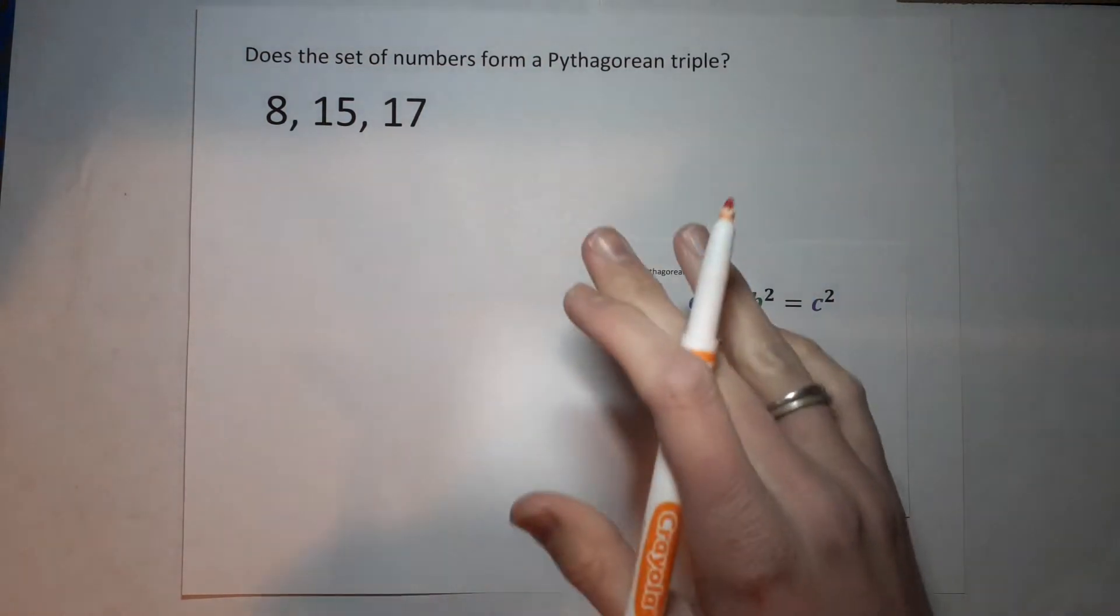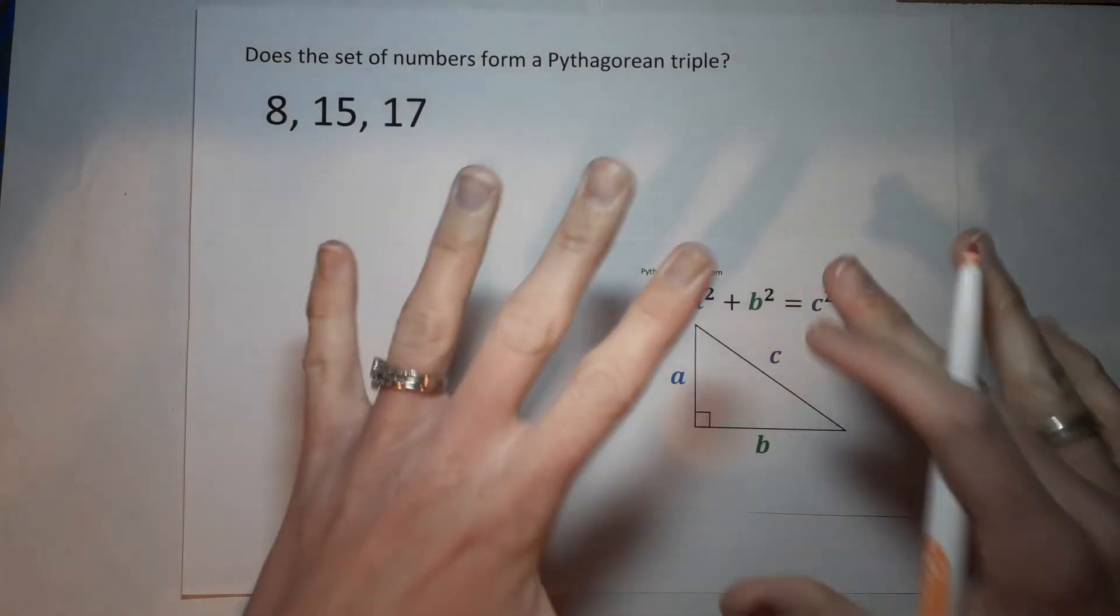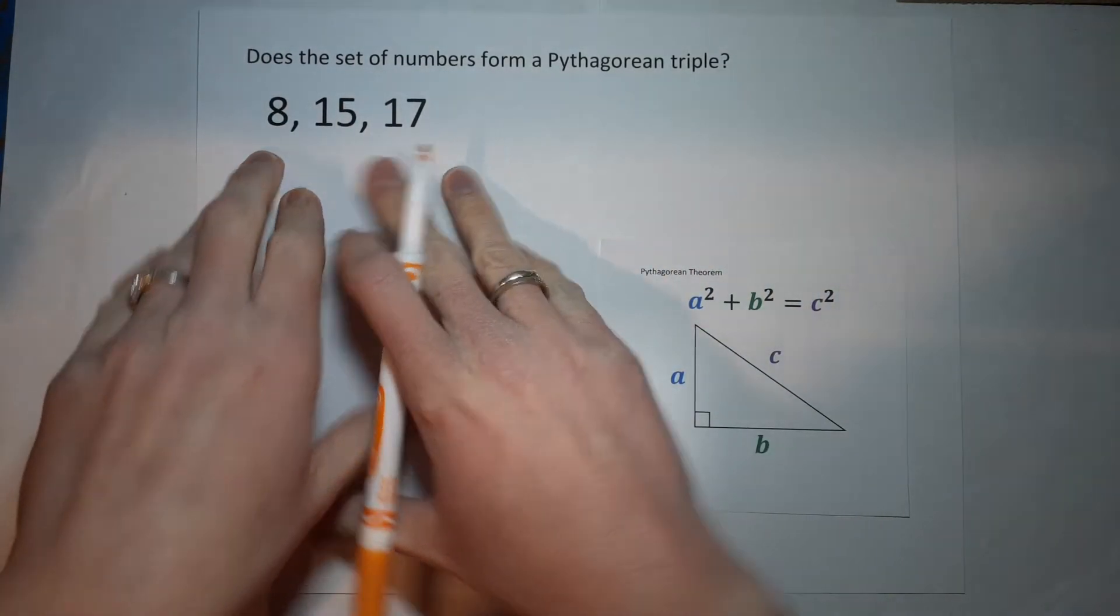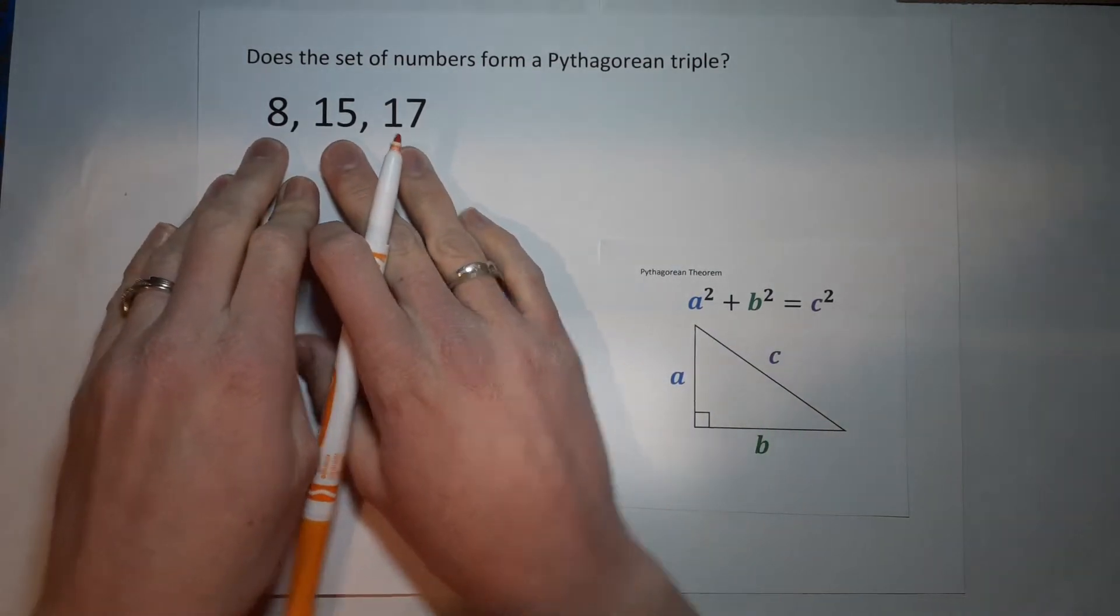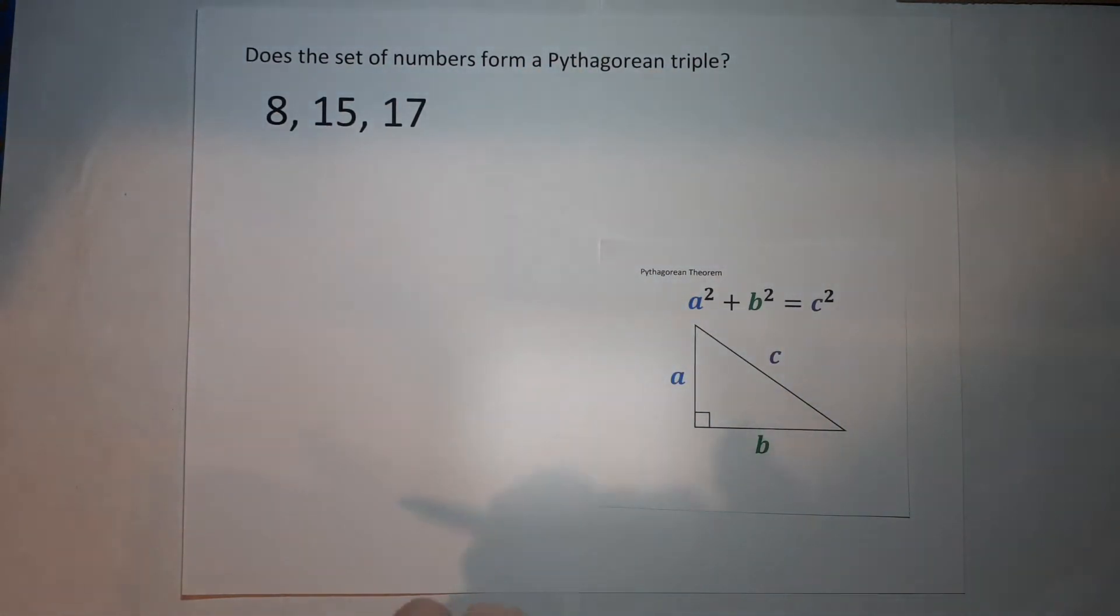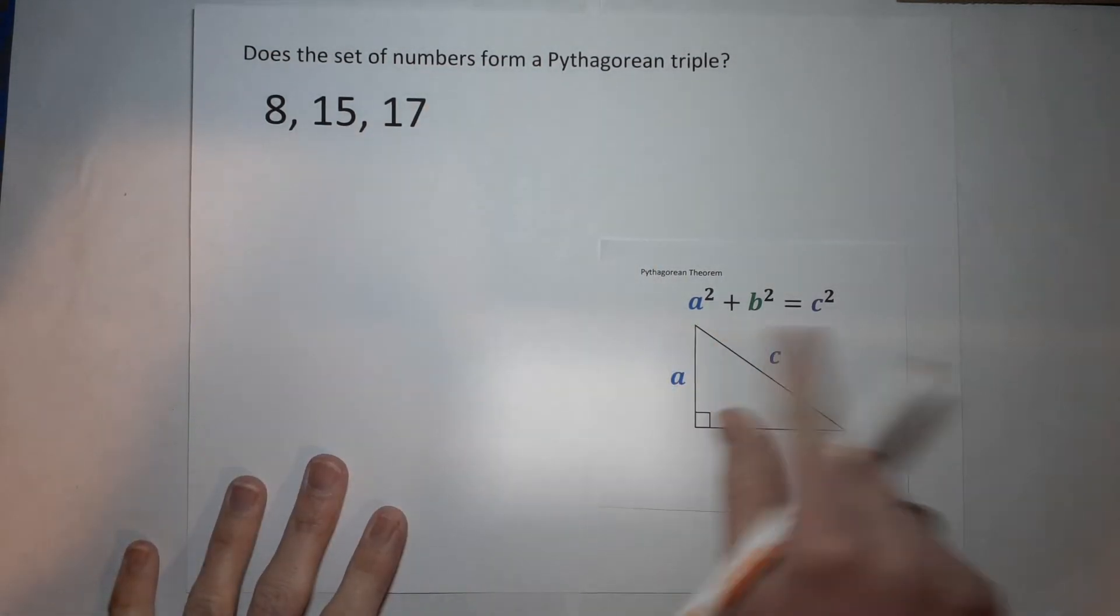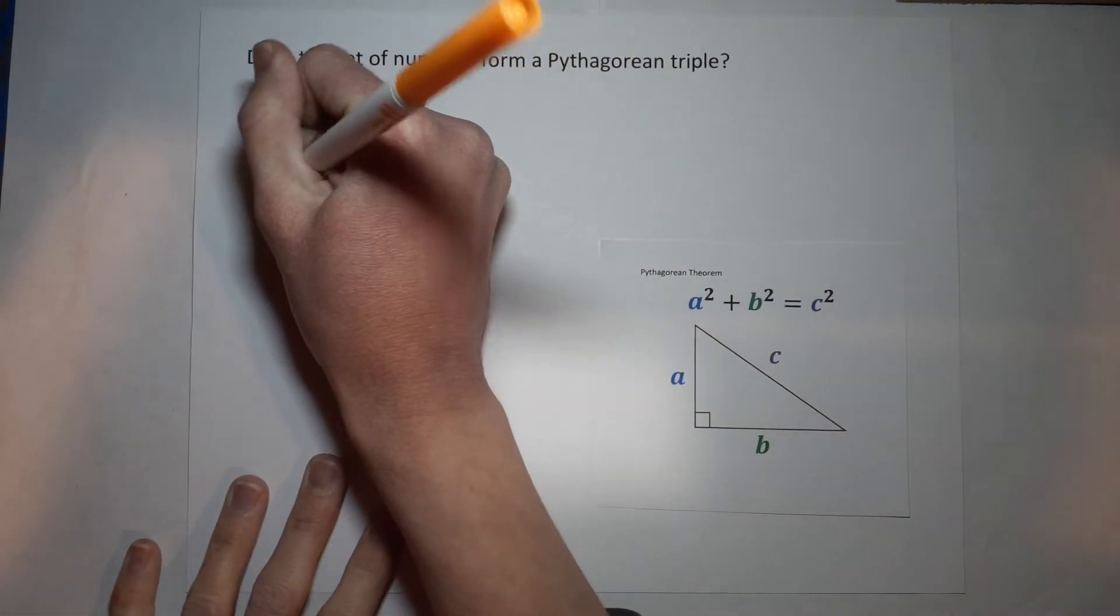Basically what they're asking is, does this set of numbers work in the Pythagorean theorem? Could these three numbers be the sides of a right triangle? So we're just going to plug it into this and see if it works.